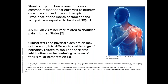Shoulder dysfunction is one of the most common reasons why patients present to a physician or physical therapist office. The prevalence of one month of shoulder or arm pain is reported to be about 30%, and there are 4.5 million visits per year related to shoulder pain in the United States alone.